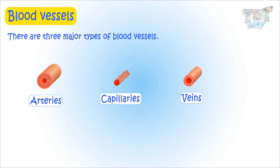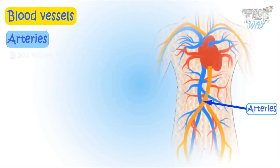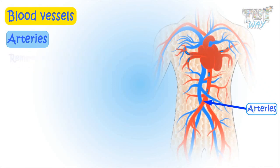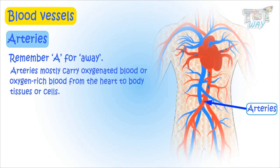Let's first learn about arteries. Blood vessels that carry blood away from the heart are known as arteries — remember 'A' for away. Arteries mostly carry oxygenated blood, or oxygen-rich blood, from the heart to body tissues or cells.